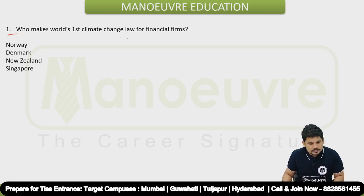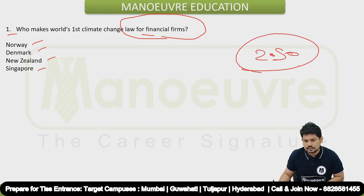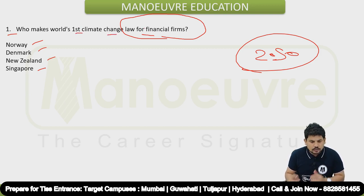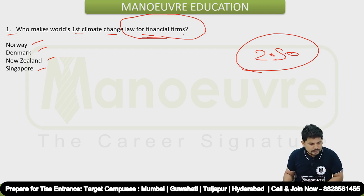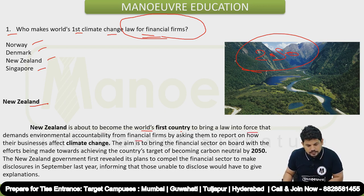First question: who made the world's first climate change law for financial firms? This is a very important initiative. The options are Norway, Denmark, New Zealand, and Singapore. The target of zero carbon emissions has been set up to 2050, and based on that, this nation took this initiative — making it the first climate change law in a legal way for financial firms.